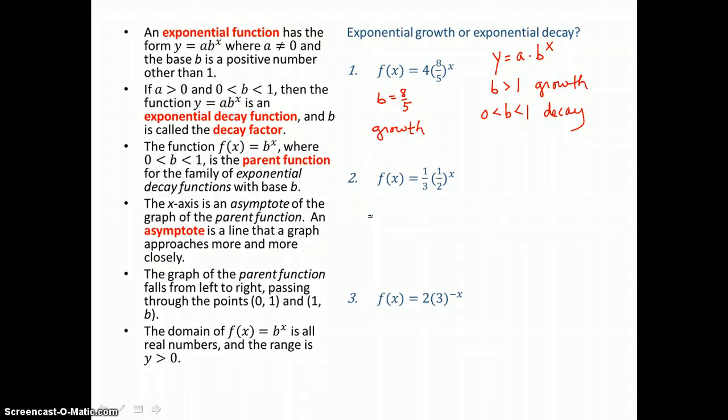The next function has a b value of 1 half, and because that value is between 0 and 1, we know that this function is representing exponential decay.